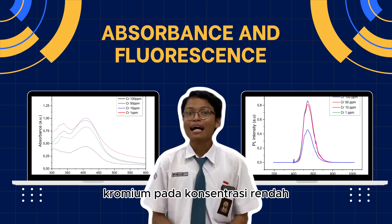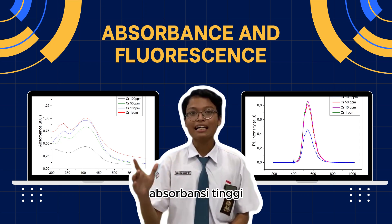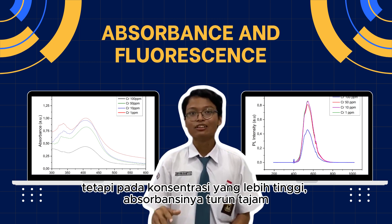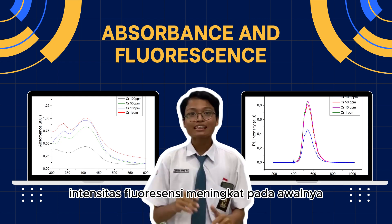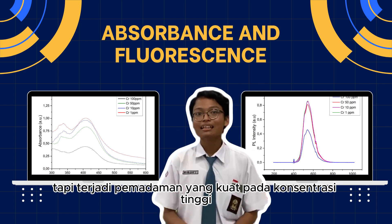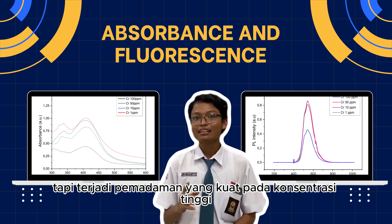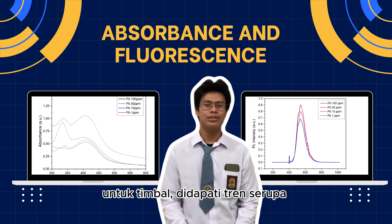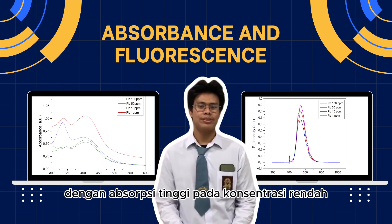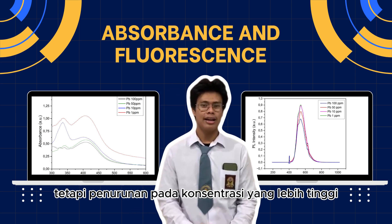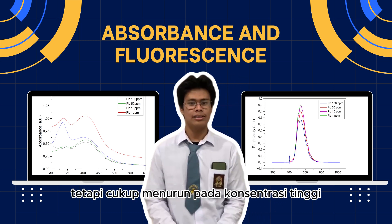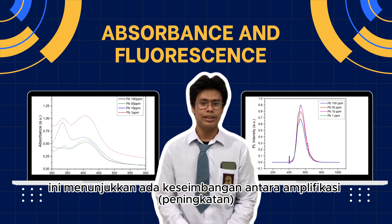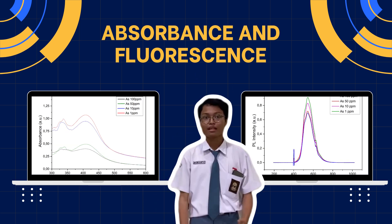Regarding absorbance and fluorescence intensity comparison for chromium: at low concentration, absorbance is high, but at higher concentration it drops sharply, indicating a variation or quenching. Fluorescence intensity increases initially, but strong quenching at high concentration leads to a steep decline. For lead, a similar trend is observed, with high absorption at low concentration but a decline at higher concentration. Fluorescence initially increases but moderately decreases at high concentration, suggesting a balance between amplification and quenching.